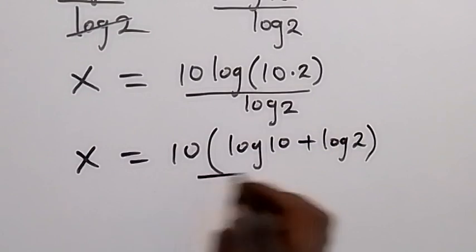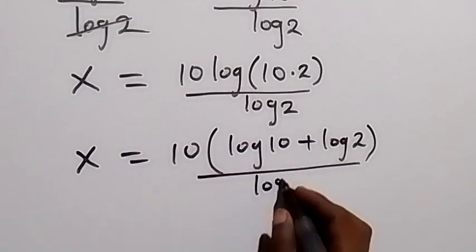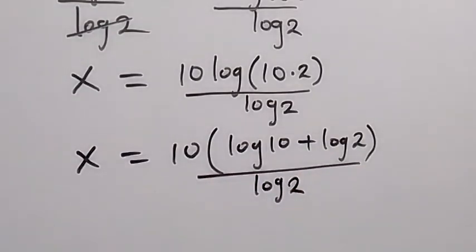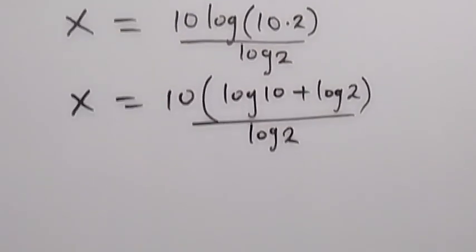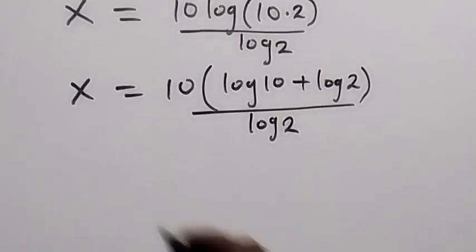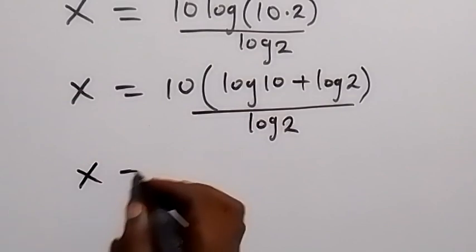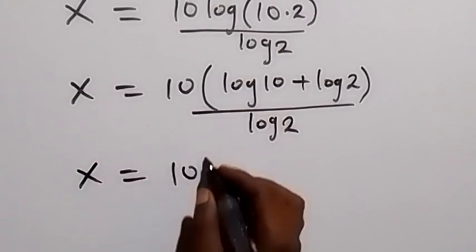Then from here, when we open the bracket with 10 and separate it, we have x equals 10 log 10 plus 10 log 2, all divided by log 2.